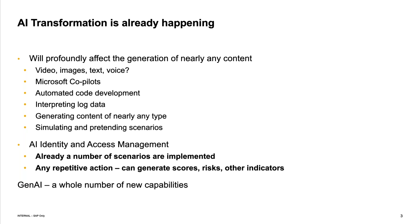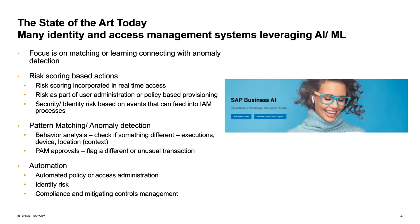AI will be there to generate content of nearly any type, and is pretty amazing at both simulations of different software applications and even simulating a person. You could conceivably write something in the style of or pretend to be a certain person and generate content. This has implications we'll be exploring to make our lives easier in terms of our access governance processes.